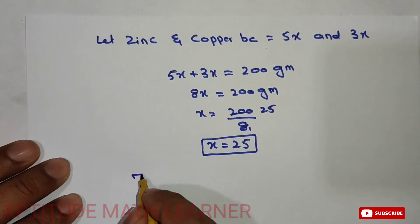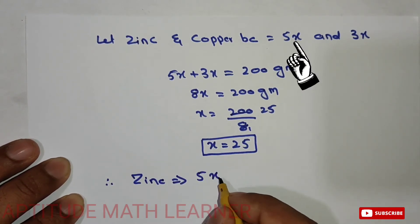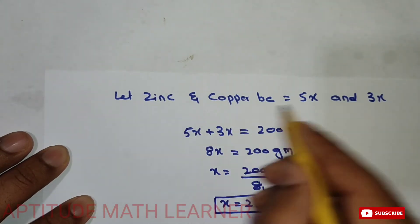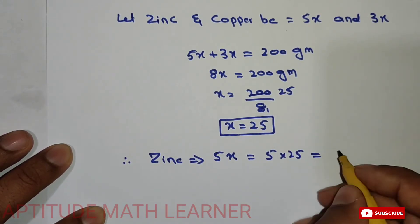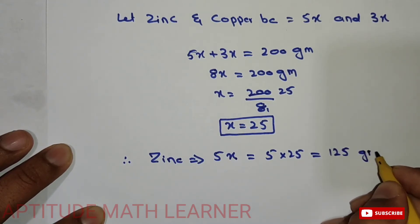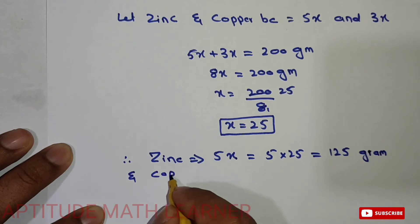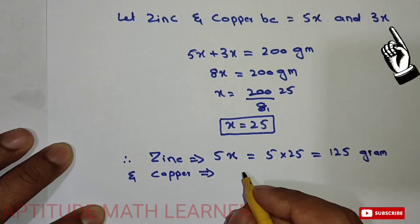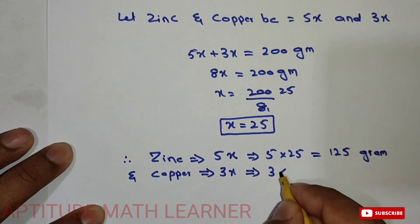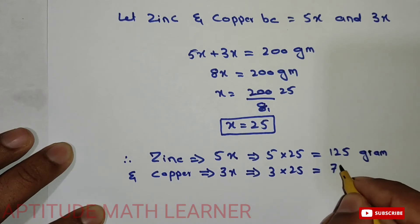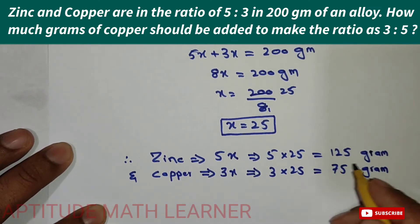Now we can find the quantity of zinc and copper in 200 grams. Zinc = 5x = 5 multiplied by 25 = 125 grams. Copper = 3x = 3 multiplied by 25 = 75 grams. So in 200 grams, zinc is 125 grams and copper is 75 grams.